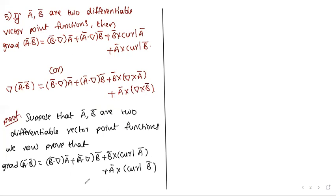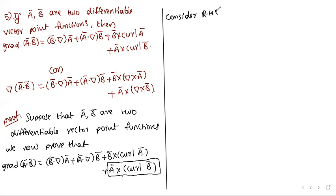For this, we consider one term from the right-hand side. By combining similar terms through addition we get grad(Ā·B̄). We consider the right-hand side part: Ā cross curl(B̄).